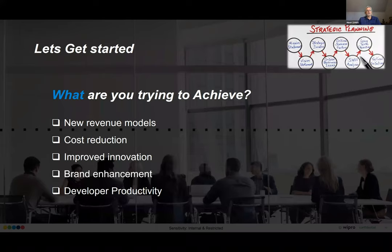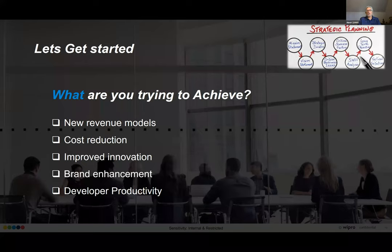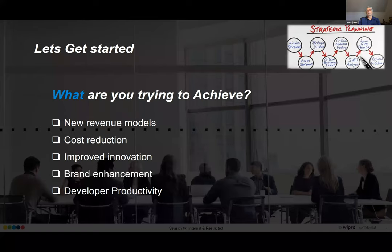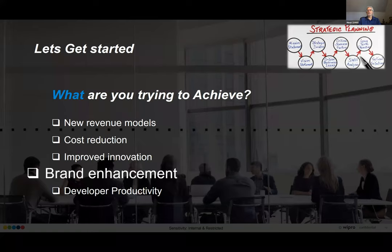Let's spend a few minutes building a sample decision support model around open source. You have to start with what you're trying to achieve. Common goals include creating new revenue models, reducing cost, improving innovation, improving brand and reputation, and developer productivity. It's really important to start by understanding what you are trying to achieve. In most organizations, you're trying to achieve one, two, or all of these. Today we're going to go through one — brand enhancement — one of those squishy things, but we hear this in almost every engagement. Our clients want to improve their brand or reputation and they think open source is a way to do so.